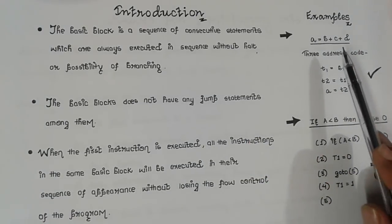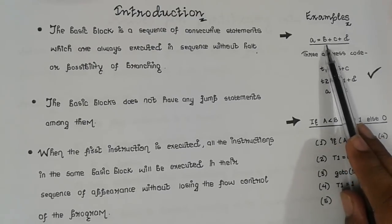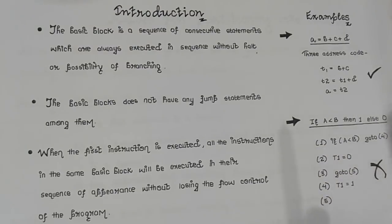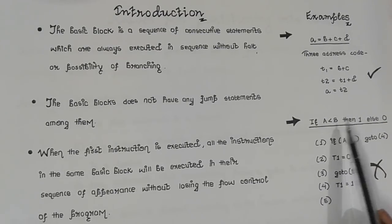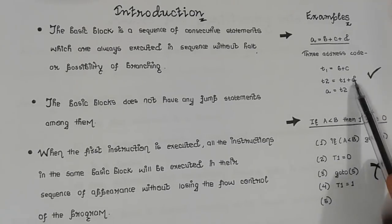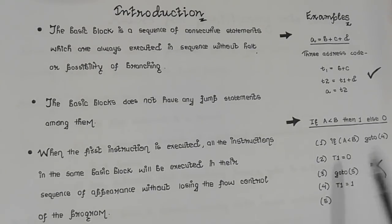Here I have two expressions. The first expression is a equals to b plus c plus t, and the second expression is: if a less than b, then 1, else 0. So I have two expressions of three address codes, which I have written here, and now we observe them.